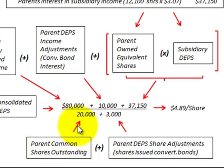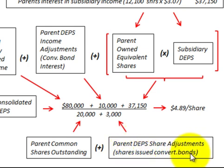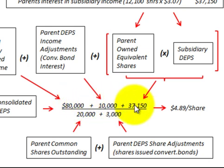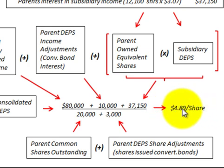For the denominator, we use the parent's common shares outstanding of 20,000, plus the parent's diluted EPS share adjustments for convertible bonds of 3,000 shares, totaling 23,000. Dividing our numerator into this denominator gives us $4.89 per share — that is the consolidated diluted earnings per share.